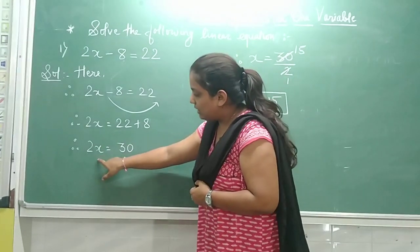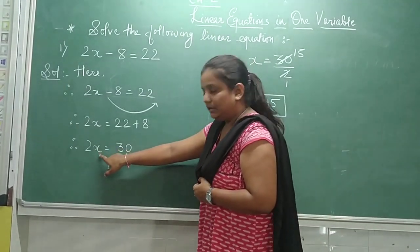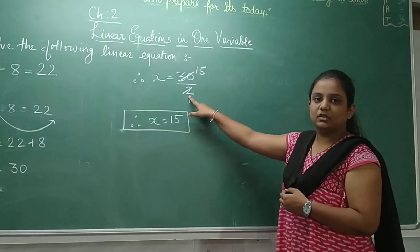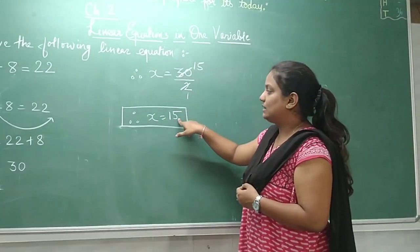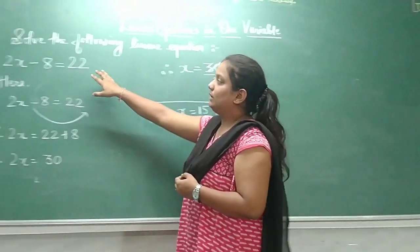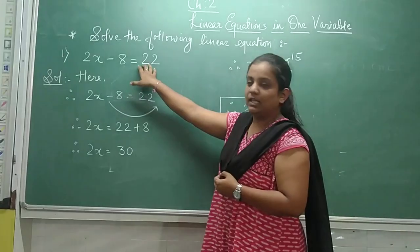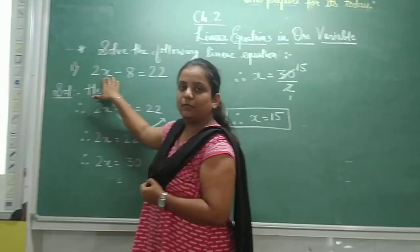Now since we are in need of this value x, this 2 on the other side goes in division and that gives an answer 15. That means for this equation to be balanced properly, the value of x needs to be 15.